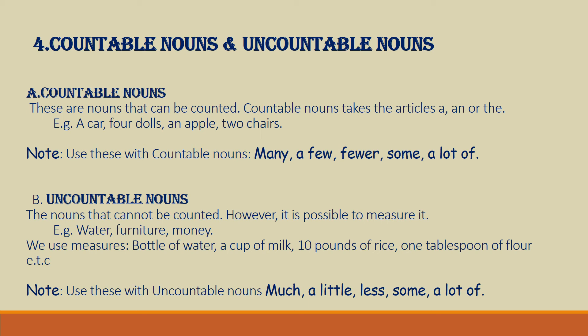Now the last type of nouns are countable nouns and uncountable nouns. Countable nouns are nouns that can be counted. Countable nouns take the articles a, an, or the. Also note that countable nouns take both the singular and the plural forms. For example, a car, four dolls, an apple, two chairs. Note that these words can be used with countable nouns: many, a few, fewer, some, a lot of.